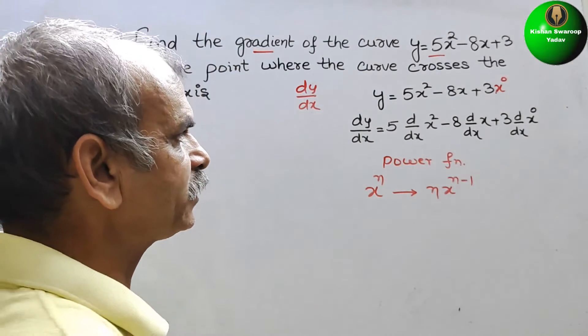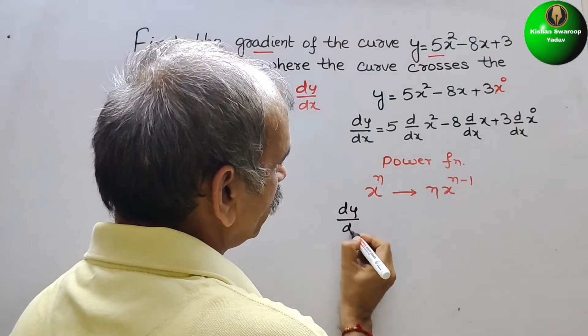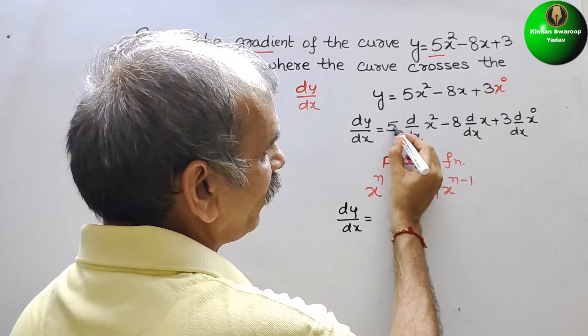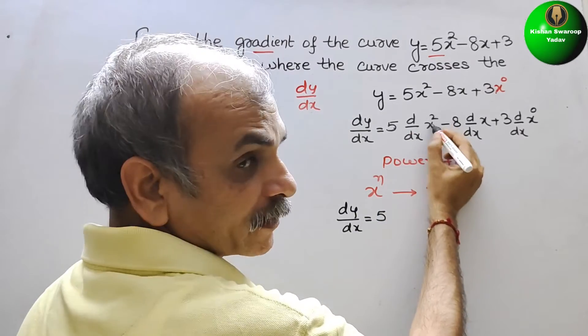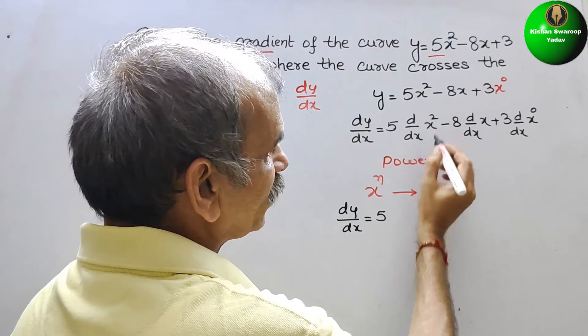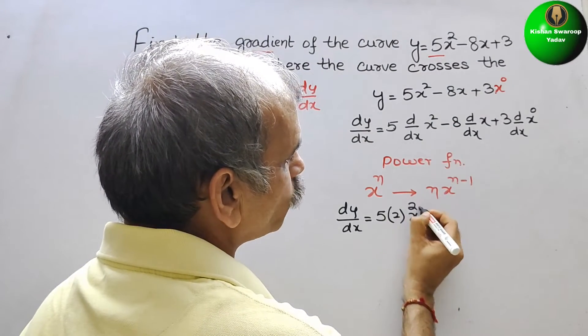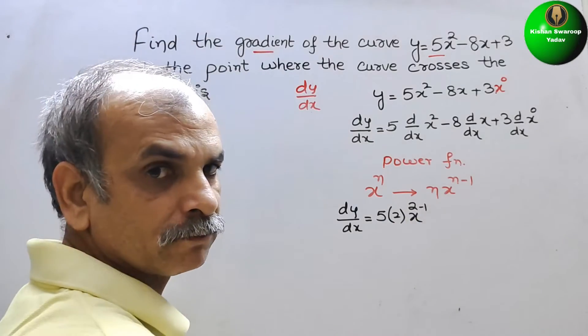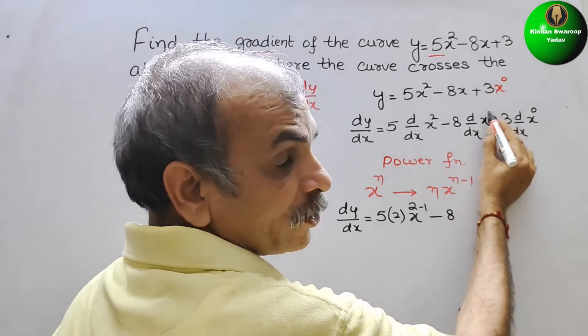So now we will write it as dy by dx is equal to 5. Now this term is like this, so here n is 2 and x to the power of 2 minus 1.